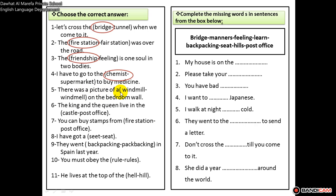Number five: windmill is spelled with an I, not an E. Number six: the king and queen live in a castle, not a post office. Number seven: you can buy stamps from a post office, not a fire station — stamps go on the envelope of a letter.